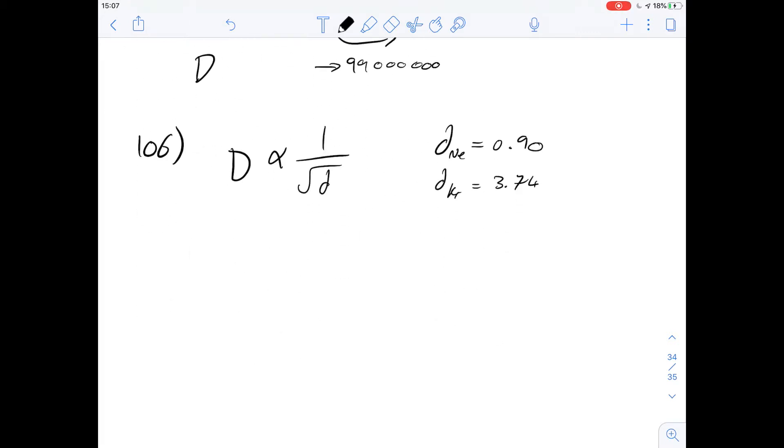Moving on then to question 106, we've got an equation here that describes how gases can diffuse and the rate of diffusion based on density. And I've copied that out here and we've got a couple of values for neon and krypton. 106 says what is the ratio of the rates of diffusion for both neon and krypton. So I think it's best just to work with science. So this answer is pretty much one and this value is pretty much four.